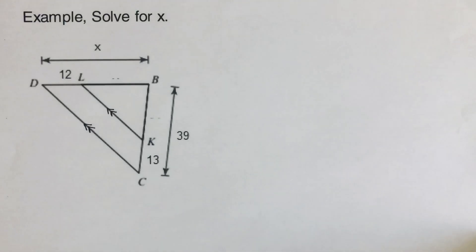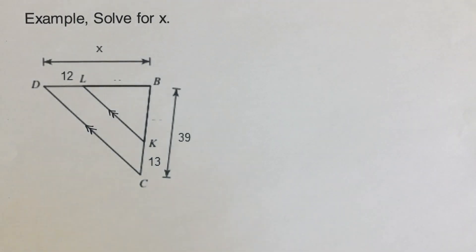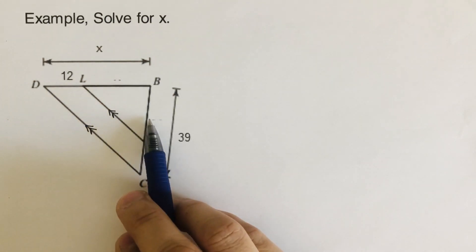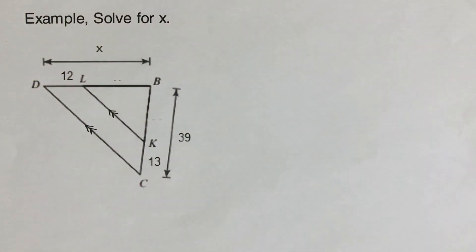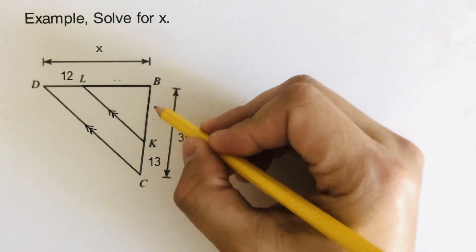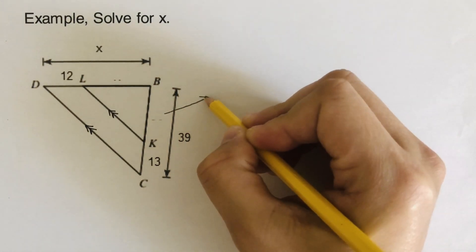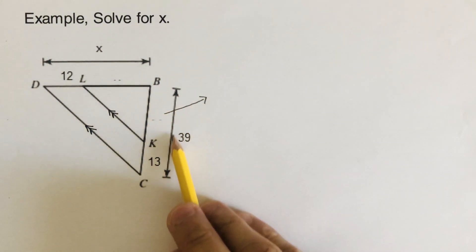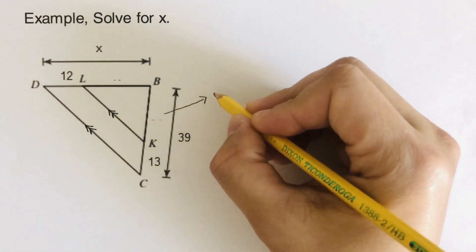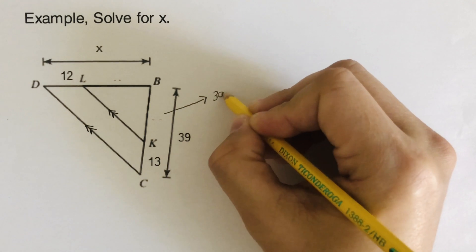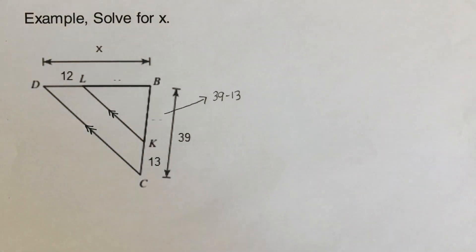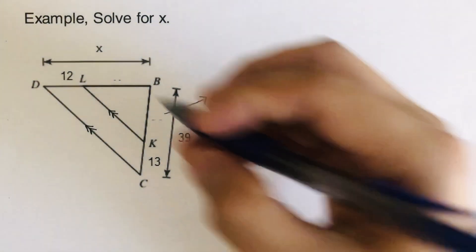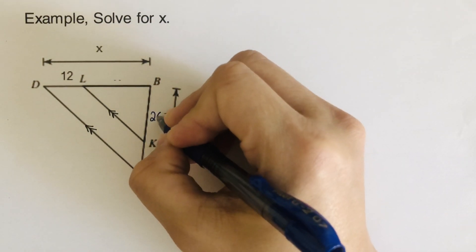Now let's try another problem. We are missing this part and this part, and we need these parts to solve for X. The first thing to remember: the whole thing is 39 and this part is 13, so we set up 39 minus 13. That means 39 minus 13 equals 26, so this side is 26.